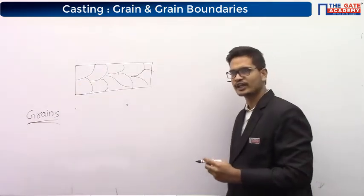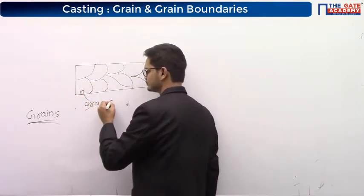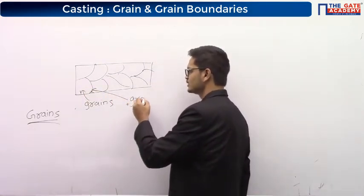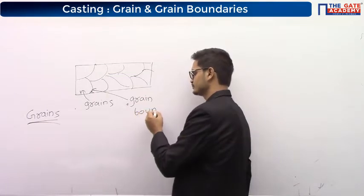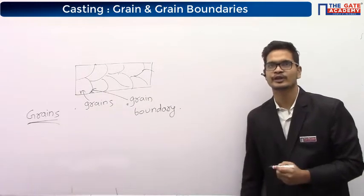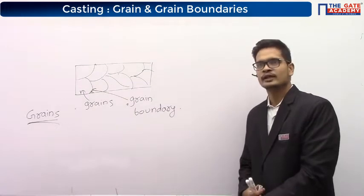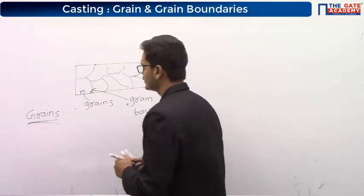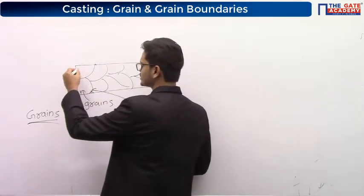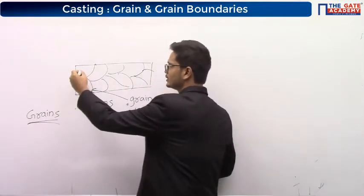These are called as grains, and this is called as grain boundary. How are the grains formed? Let's just take an example of these two grains — this one and this one.